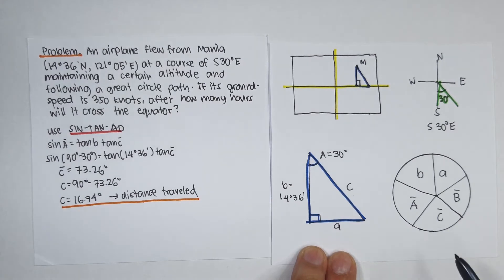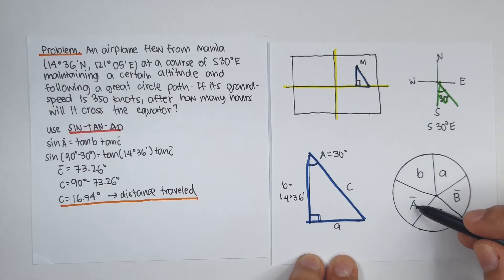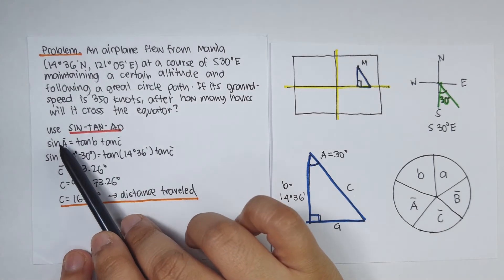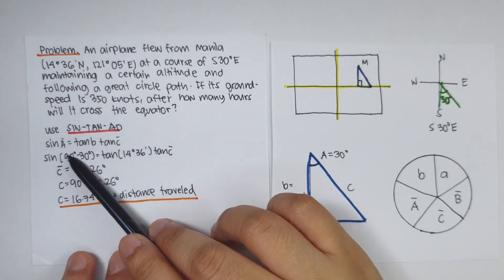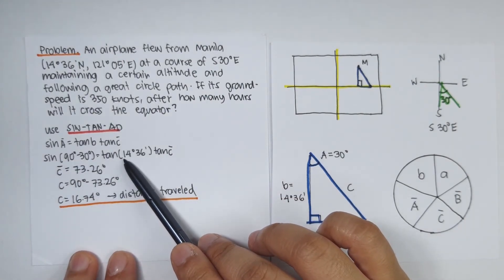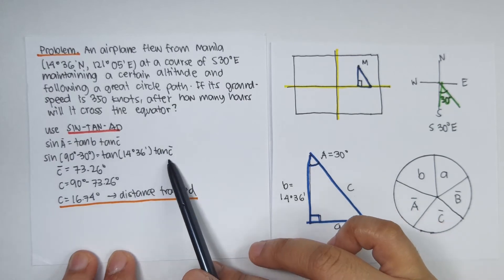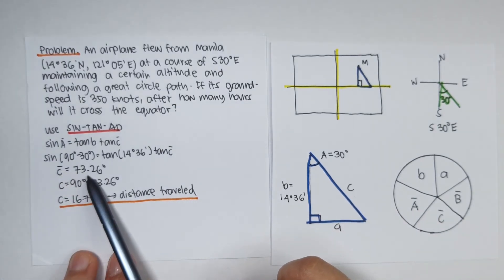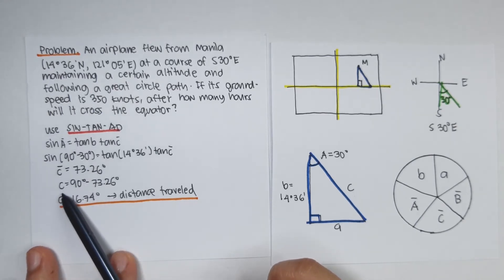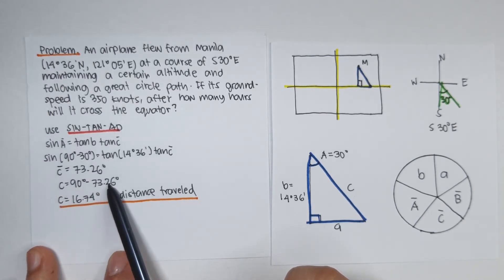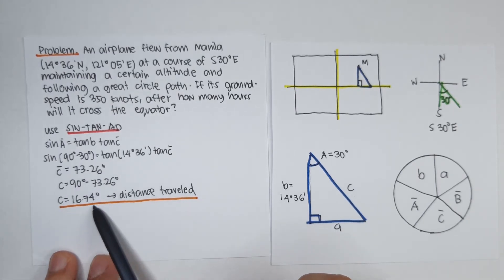And we know the value of B and the value of A bar. And what we need is the value of C. So as you can see, we can use the sin-tan-ad rule to solve for C. That is, sine of A bar is equal to the tangent of its adjacents. So sine A bar is equal to tangent B times tangent C bar. So sine of 90 minus 30 is equal to tangent of 14 degrees and 36 minutes times tangent of C bar. So C bar is equal to 73.26 degrees, where C is equal to 90 minus C bar. So that is 90 minus 73.26 degrees. Therefore, C is equal to 16.74 degrees. So this right here is the distance traveled by the airplane.